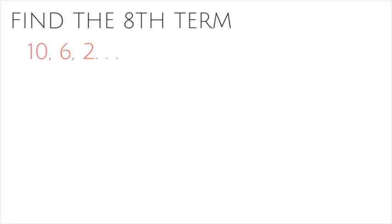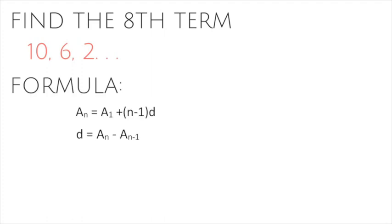Let's have this example. Find the 8th term of the sequence 10, 6, 2. As we can see, the terms are arranged in descending order, which implies the common difference should be negative. The formulas we will use are d is equal to a sub n minus a sub n minus 1, and a sub n is equal to a sub 1 plus n minus 1 multiplied by d.